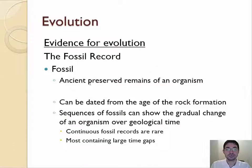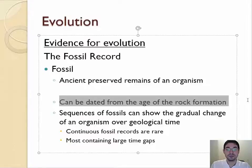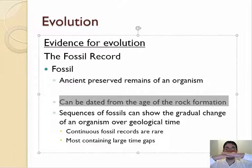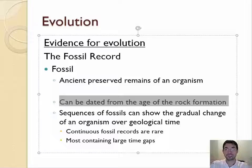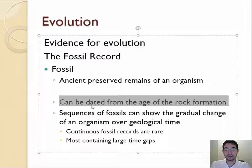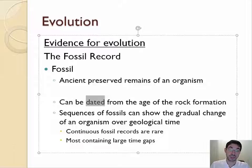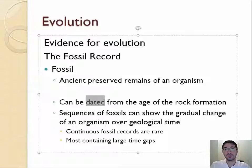A fossil consists of ancient preserved remains of an organism, and they can be dated to the age of the rock they're in. Generally speaking, when something dies it goes on the ground, and the next thing that dies goes on top of it. The closer to the surface something is, the more recent it is; the deeper it is, the older that fossil is. That's called the law of vertical superposition in geology. You can also use radioactive dating to double-check it, and through both methods you can actually tell how old fossils are.